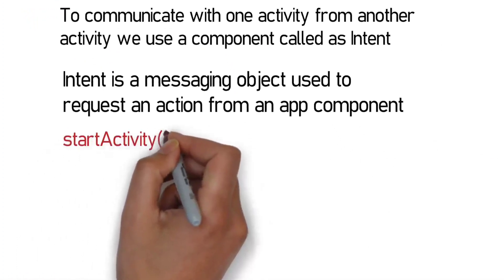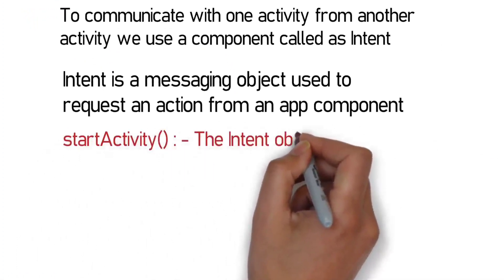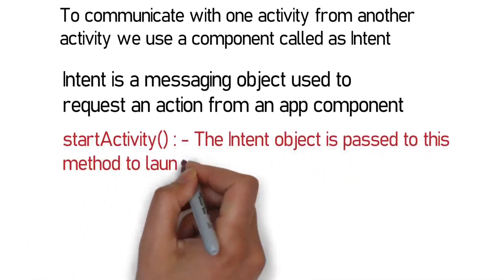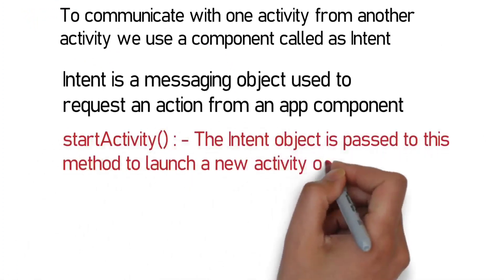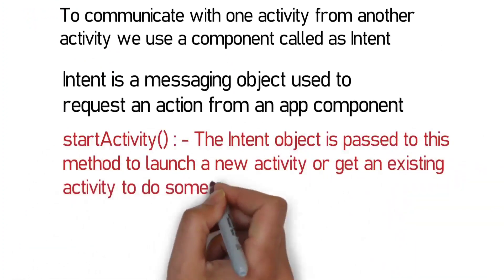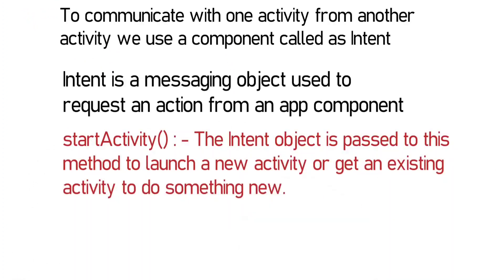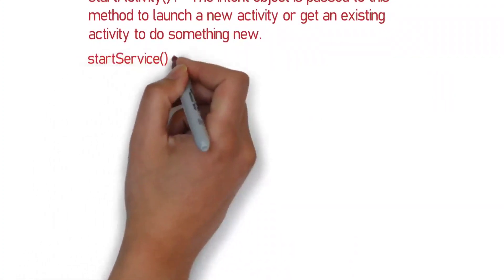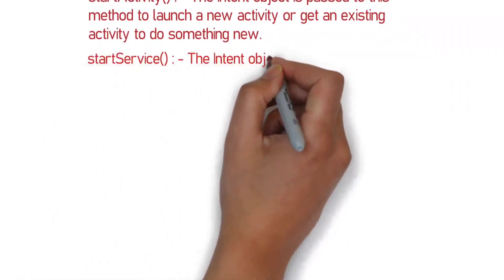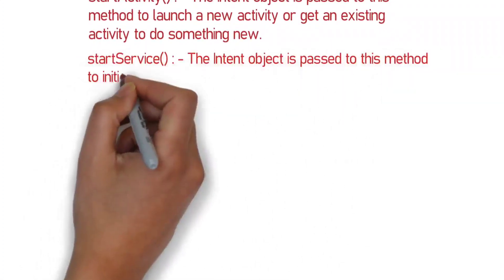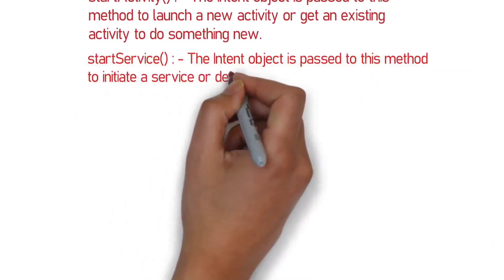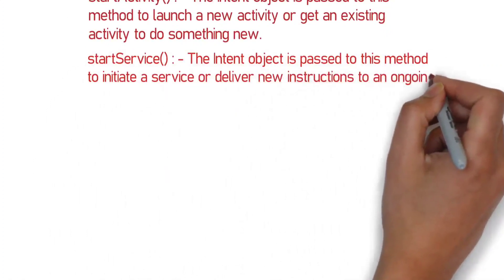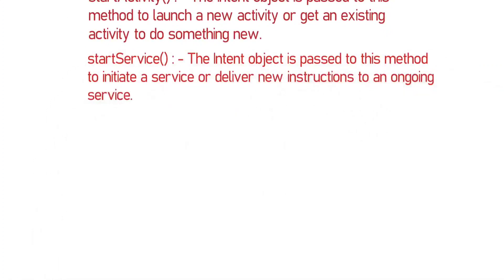When one activity starts another activity, we call the startActivity method, and the argument is an intent object. When an activity calls a service, we use the startService method, and the argument is also an intent object.